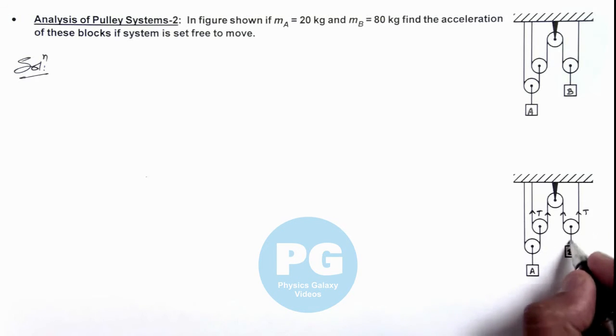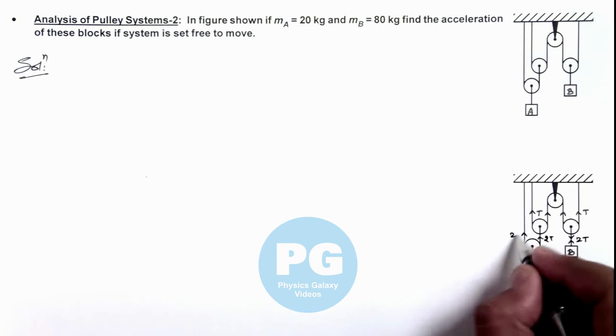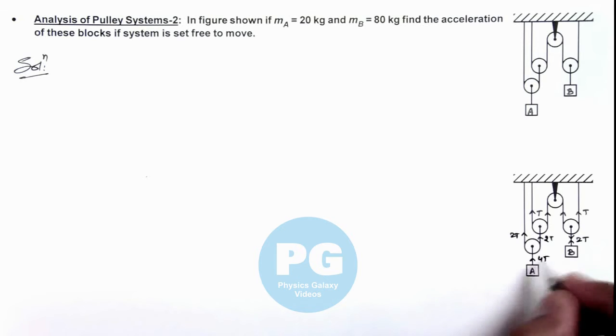So here in this string tension can be taken as 2T. And here if tension is 2T, then in the lower string tension can be taken as 4T.